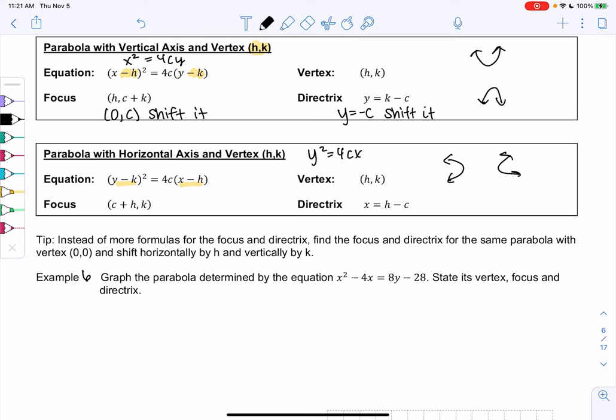Now that we're on the horizontal axis, it's (c,0), and we just shift it to (c + h, k), and the directrix was x equals negative c. Shift it, and we get h minus c from the horizontal shift.